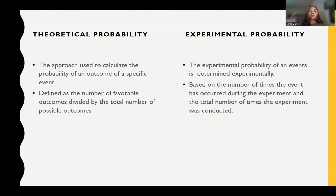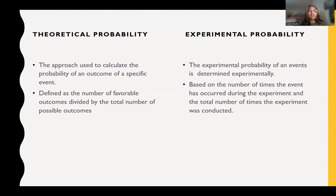When we're talking about experimental probability, this probability is determined experimentally, and it's based on the number of times that the event has occurred during that experiment and the total number of times that the experiment has been conducted.